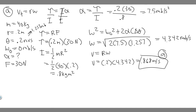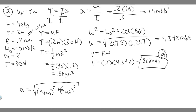Now let's move to Part B, which asks for the magnitude of the resultant acceleration of a point on the rim after 0.2 revolutions. The formula for resultant acceleration has two components: the resultant acceleration equals the square root of the tangential acceleration squared plus the centripetal (radial) acceleration squared.